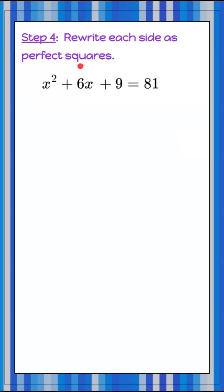Step four, we're going to rewrite each side as perfect squares. So x squared plus 6x plus 9 can be rewritten as x plus 3 squared, and 81 is 9 squared. It's a perfect square.